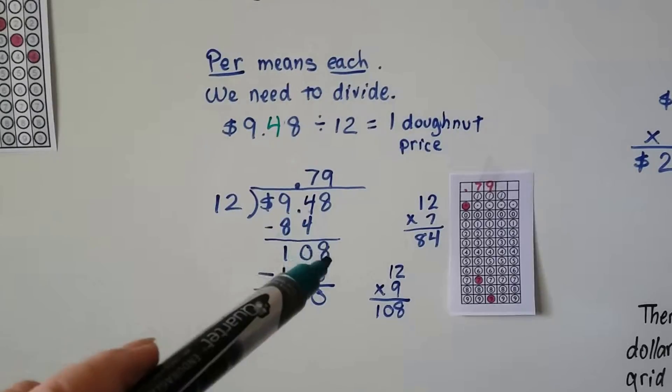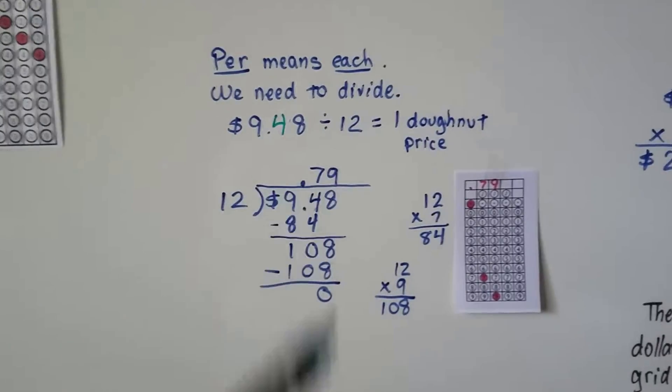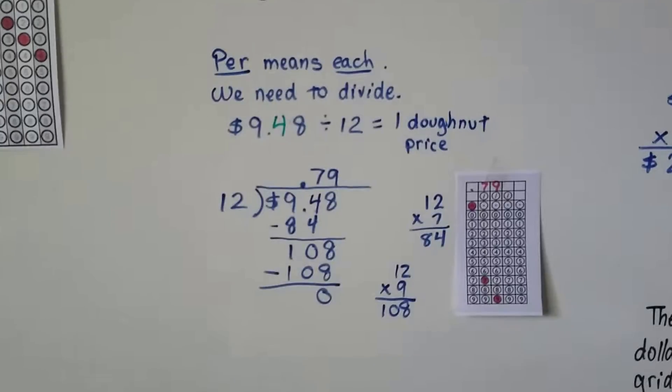We get a 10 left over. It's the 8's turn to come down. 12 goes into 108. Well, 12 times 9 is 108. So it turns out to be 79 cents for each donut.